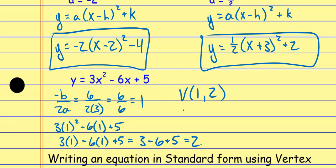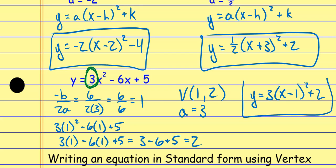Students will try to do crazy things to figure out the a value, but look — in the opposite of b over 2a, you already identified a. You plugged a 3 in for a — that's the a value. The a value in standard form and the a value in vertex form are literally the same a value. The a value is 3. Now I write it down: y equals 3, then x minus 1 — the opposite of the x value from the vertex — and then plus 2, which is the k value exactly as written. And that's it.